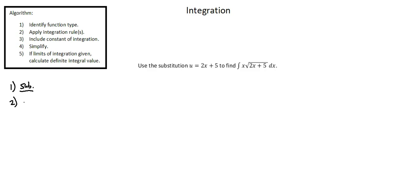When we substitute u equals 2x plus 5 and think about how that relates to integrating, in our original integral we have three x terms — two different x functions and the dx term. Beginning with what we're given as a substitution, u equals 2x plus 5, if we differentiate du over dx, the derivative of u with respect to x equals 2. That's what's left when we differentiate 2x plus 5.